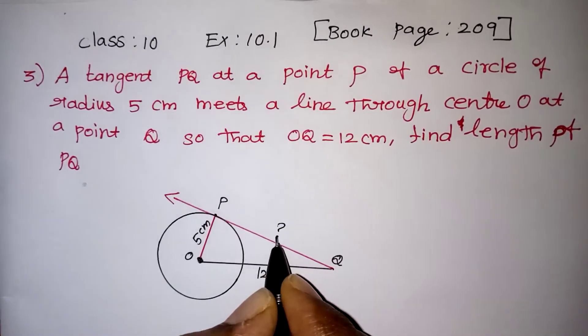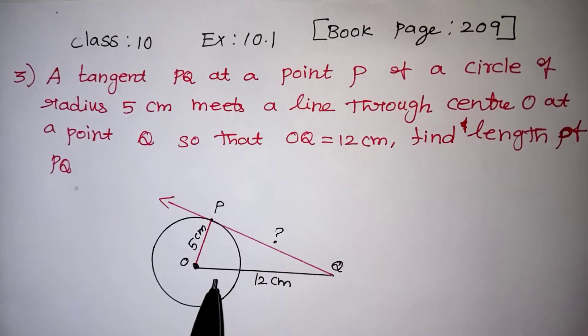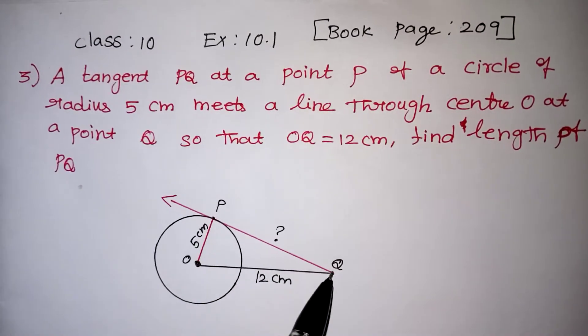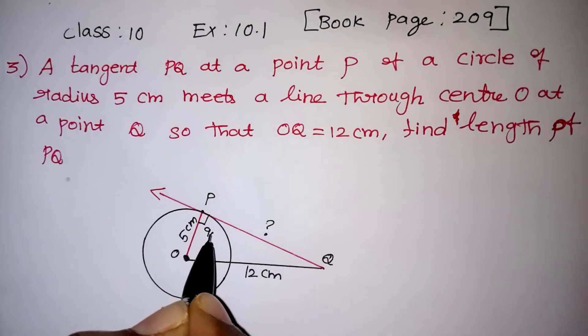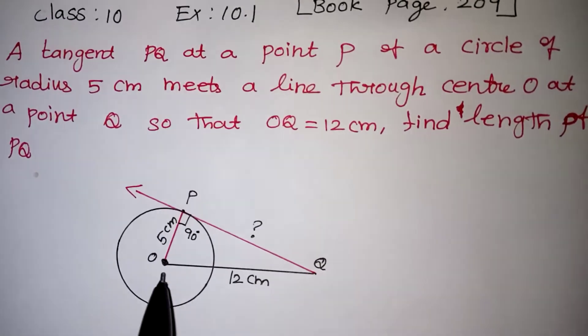So here is a question mark. Now there is a basic condition - all tangents and radius will form a 90 degree angle. So this is 90 degrees. So this is a triangle, a right angle triangle.